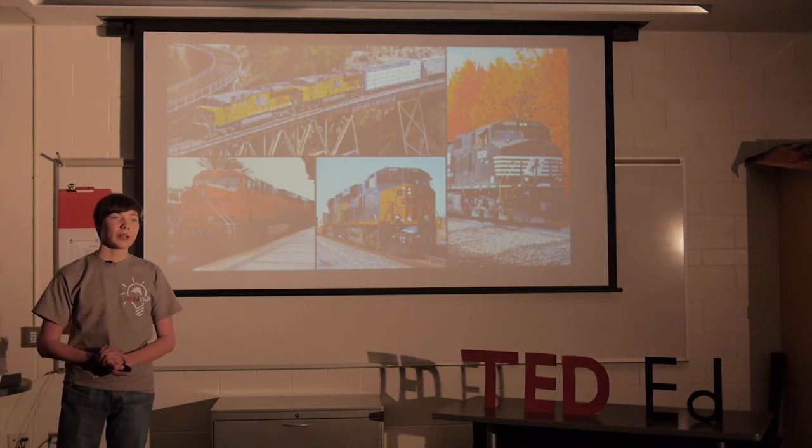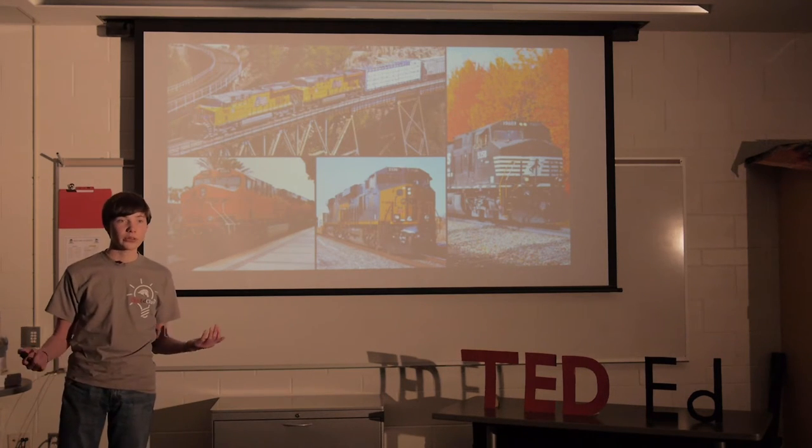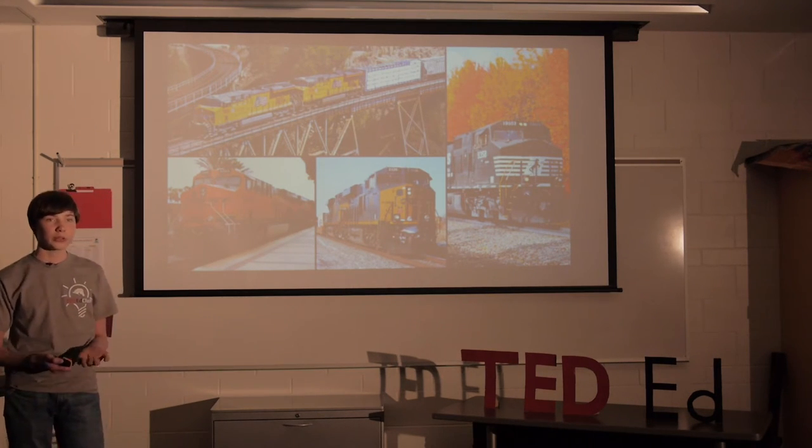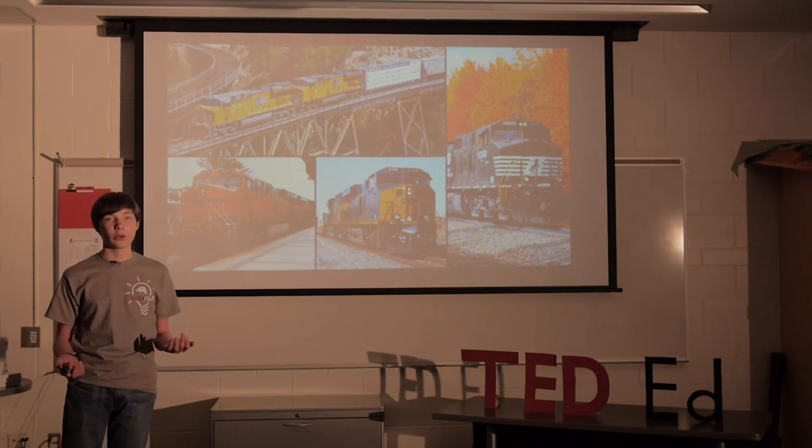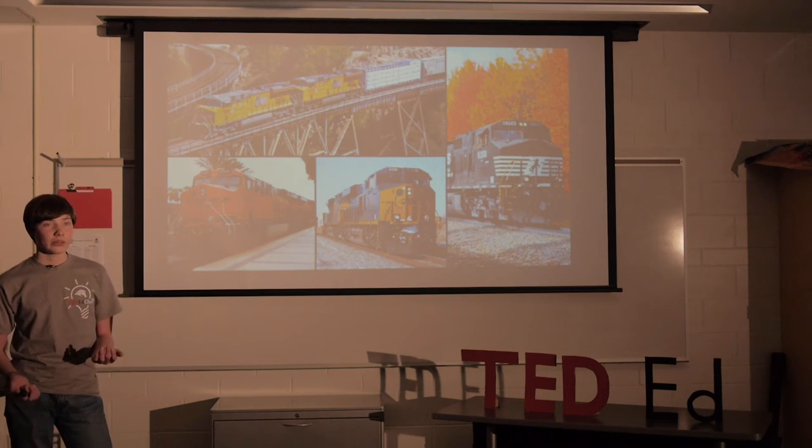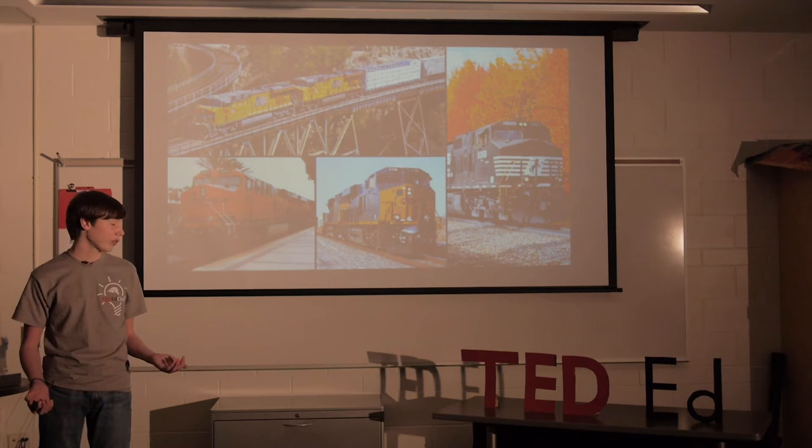A lot of people ask, why can't we just run fast trains on existing tracks? We see trains all the time. Why don't we just run a bullet train on those? Well, the simple answer is that these tracks are owned by private rail companies. They get to control the tracks and can decide whether we want to run those fast trains or not.